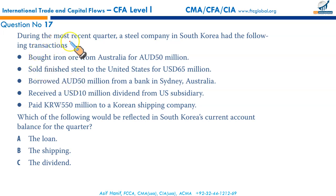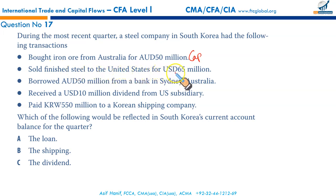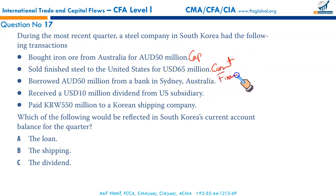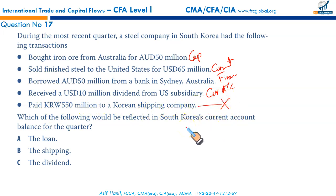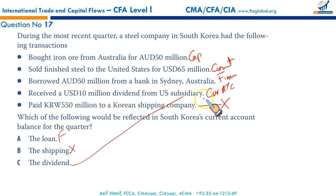A South Korean steel company had the following transactions: bought iron ore from Australia for AUD 50 million — reflected in the current account; sold finished goods to the US for USD 65 million — current account; borrowed AUD 50 million from a Sydney bank — financial account; received USD 10 million dividends from a US subsidiary — current account; and paid KRW 550 million to a Korean shipping company — within the country, not reflected in the balance of payments. The dividends received from the US subsidiary are reflected in South Korea's current account.